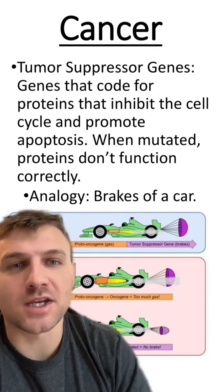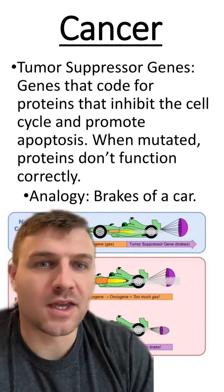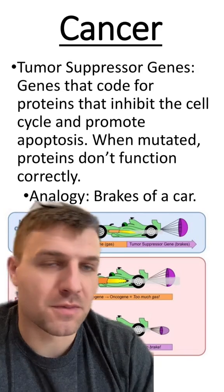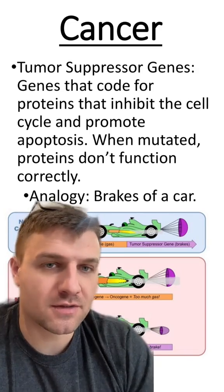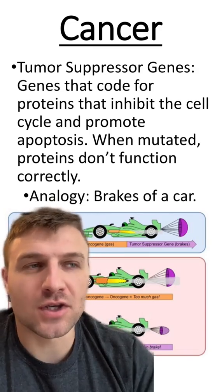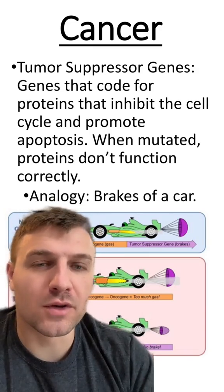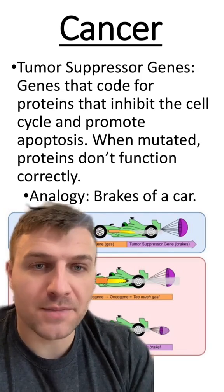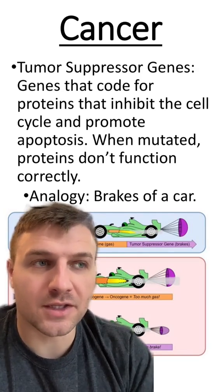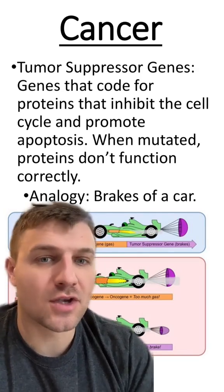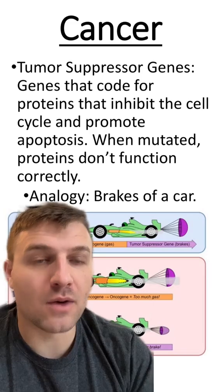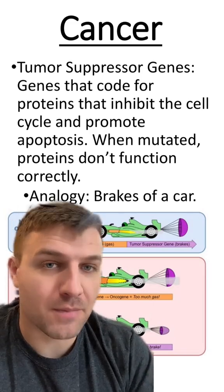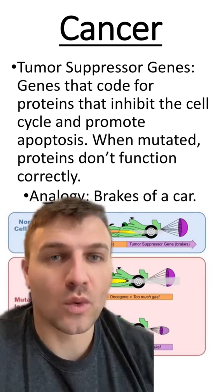The other type of mutation that will lead to cancer usually occurs on the tumor suppressor genes. These genes code for proteins within the cell that will stop the cell from going into mitosis, or that will promote the cell to go through apoptosis.